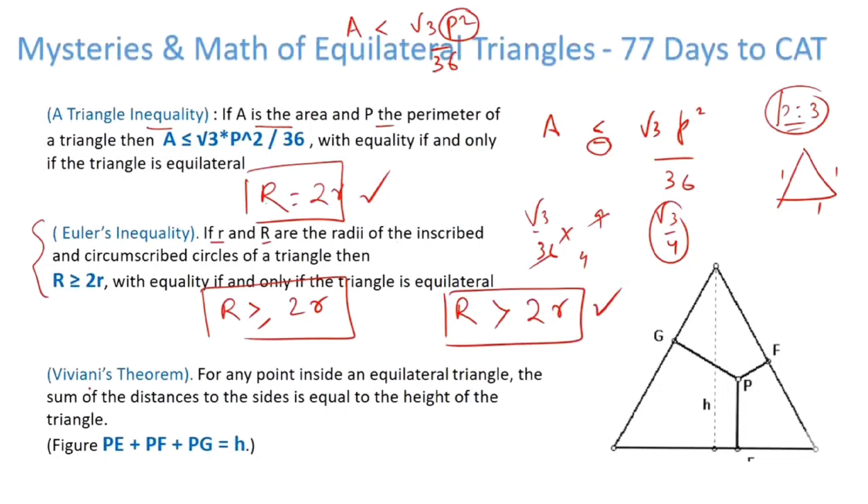There is something called Viviani's theorem. For any point inside an equilateral triangle, the sum of the distances to sides is equal to the height of the triangle. If I take any point inside an equilateral triangle and if I draw perpendicular to the sides, the sum of the distances will be equal to the height of the equilateral triangle, which is root 3 by 2 into S. You take any point, you can find it out. Easiest way to find out is take the point on the centroid itself.